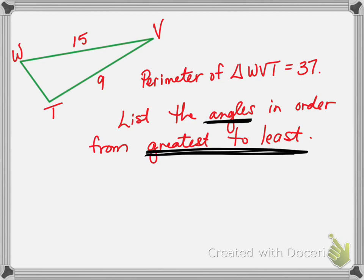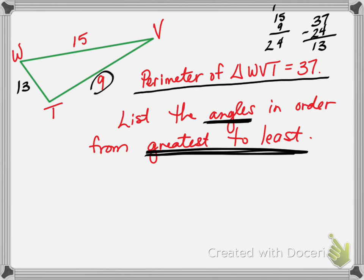So I'd like to get started putting these angles in order. But I don't know what the length of side WBT is. But they did give us a clue. They told us the perimeter of WBT was 37. So that means all the sides added together is 37. So if we can add up the two sides that we know and subtract from the total perimeter, that'll give us the length of this side that's missing.